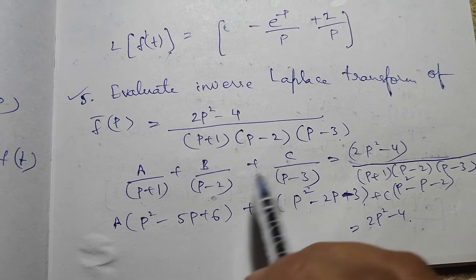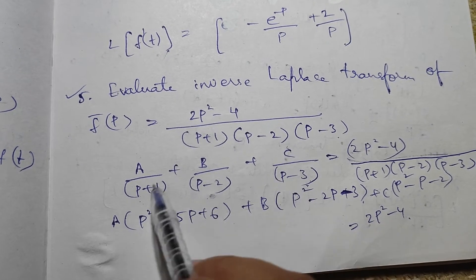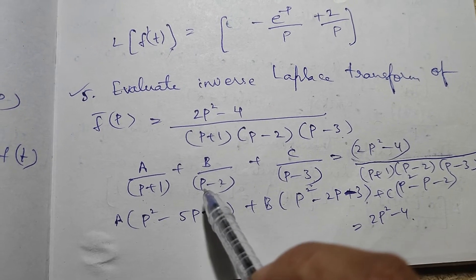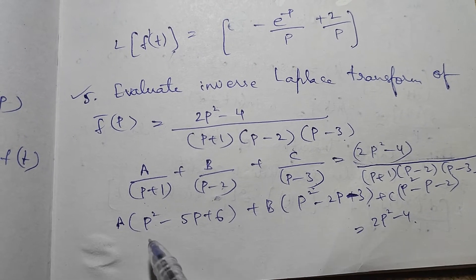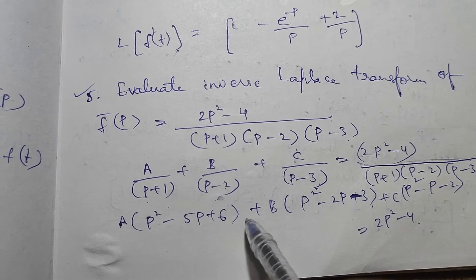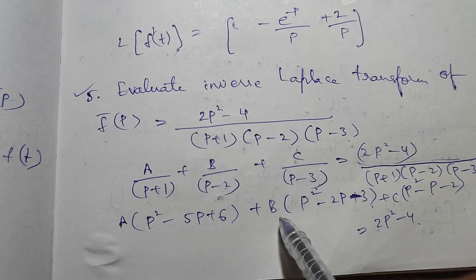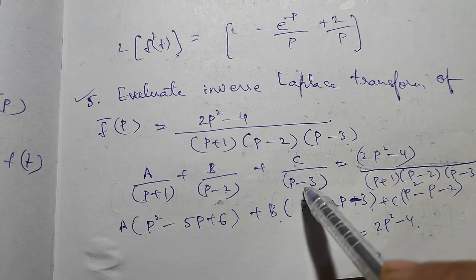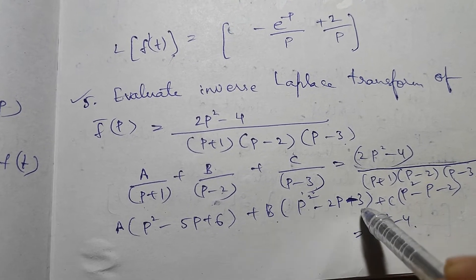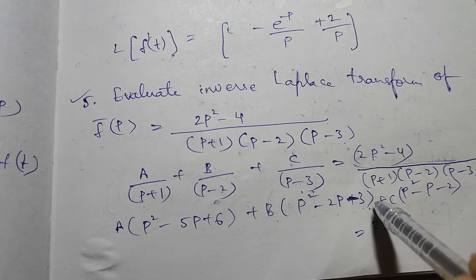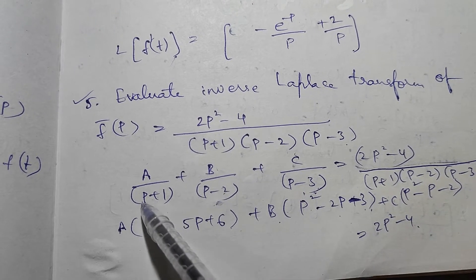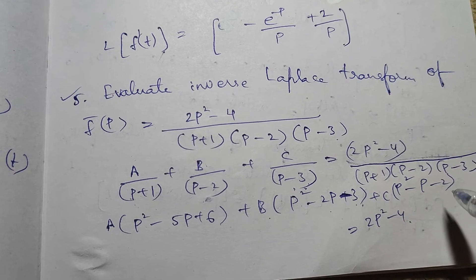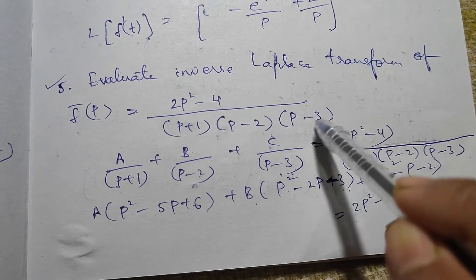Now A multiplied by the remaining two factors, B multiplied by its two factors, and C multiplied by its two factors. So A·(p-2)(p-3) = p² - 5p + 6, plus B·(p+1)(p-3) = p² - 2p - 3, plus C·(p+1)(p-2) = p² - p - 2, which equals the numerator 2p² - 4.